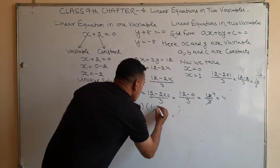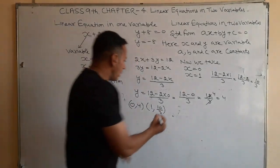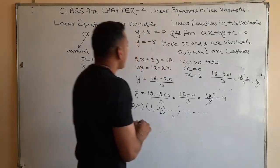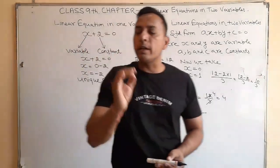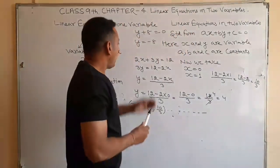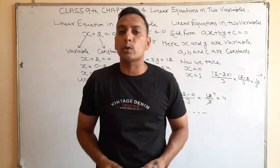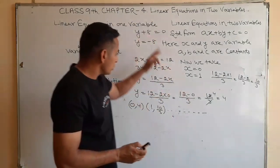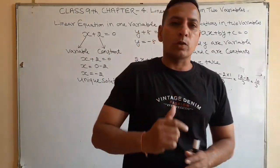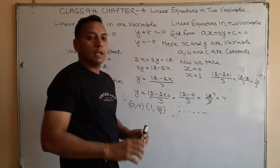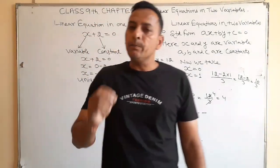When x value is 1, then y value is 10 by 3. So we can find out many values. This means that if we substitute values to satisfy this equation, we have infinitely many solutions. If we have a linear equation in two variables, then we have infinitely many solutions.